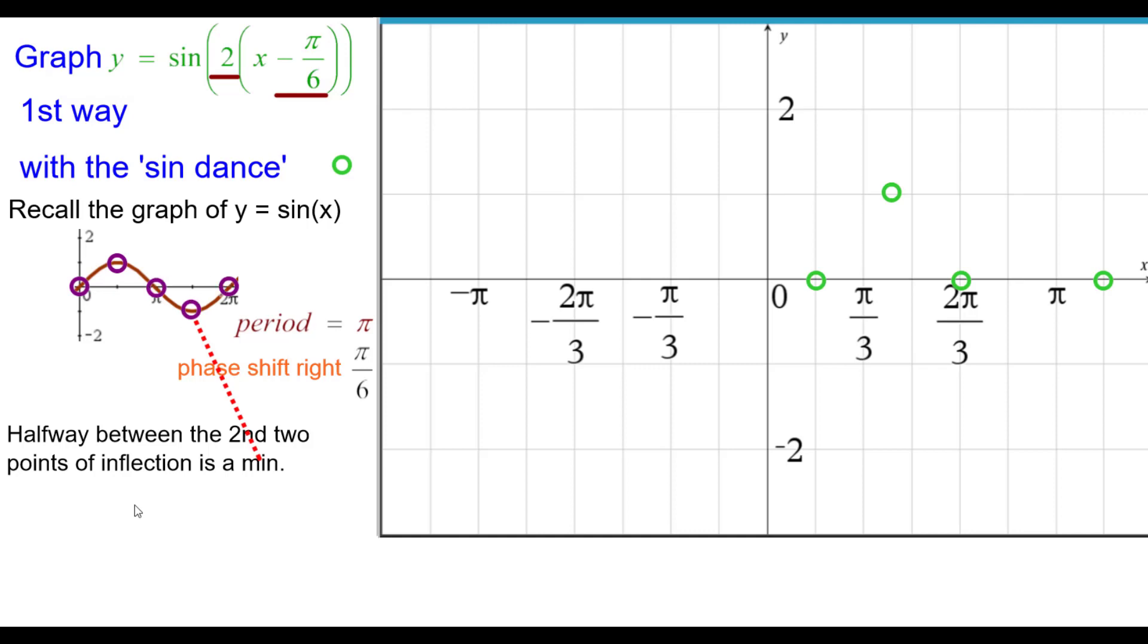Halfway between these two points of inflection is a minimum. So halfway between these two would be right here. And the point will have coordinates 11 pi over 12, comma, negative 1.